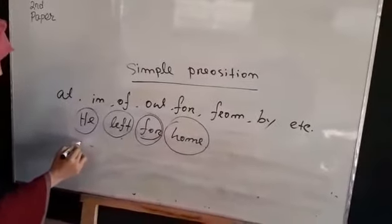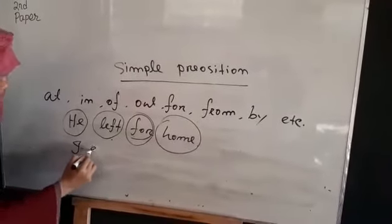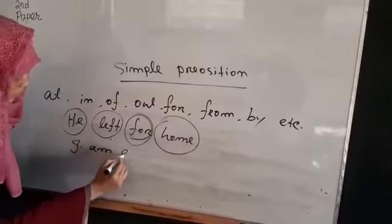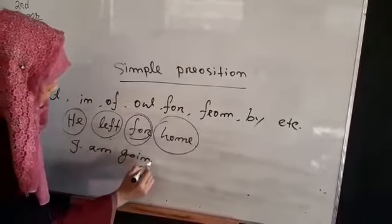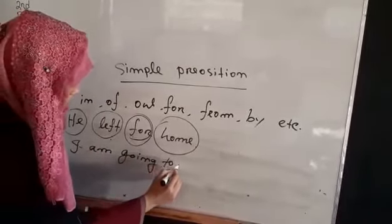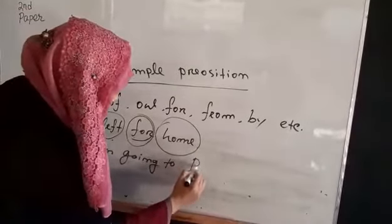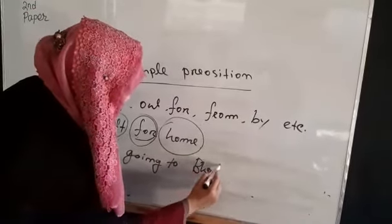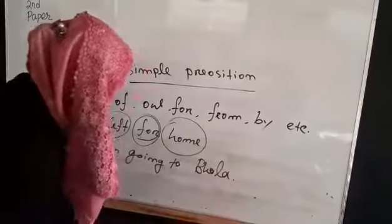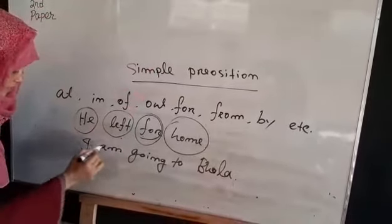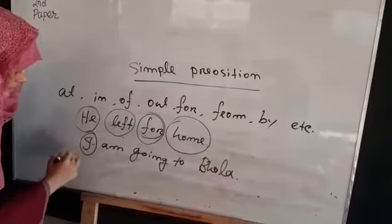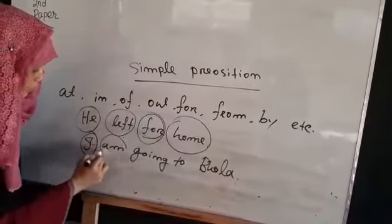Next, I am going to Bhola. In this sentence: I is subject, am is auxiliary verb, going is root verb.